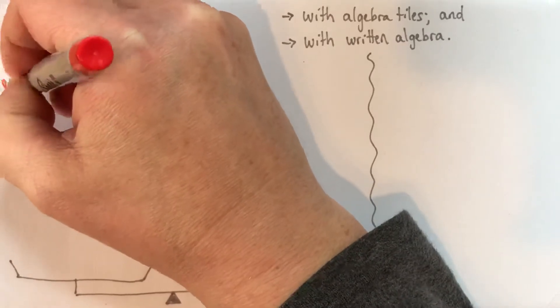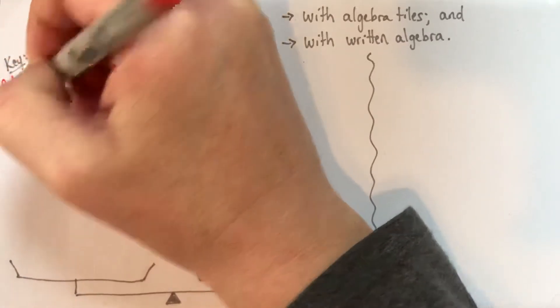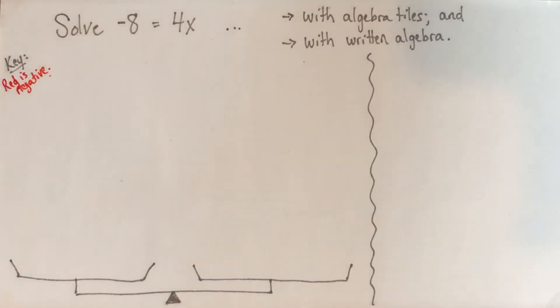Red is negative. And as long as the person reading your work knows what's negative and what's positive. So if you don't have an agreement in your class or whatever, just make sure you make a little note in the corner of your work.